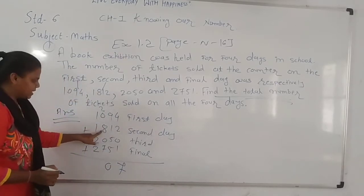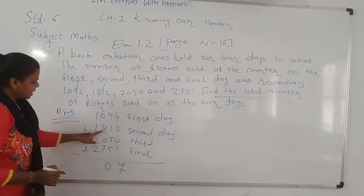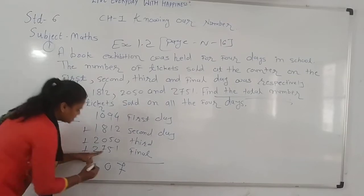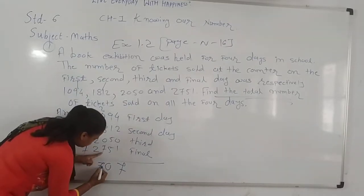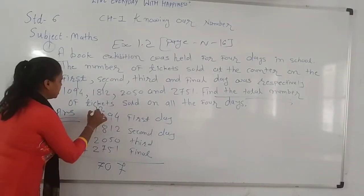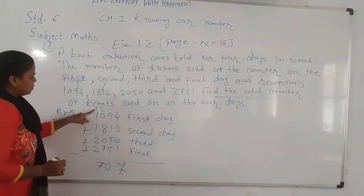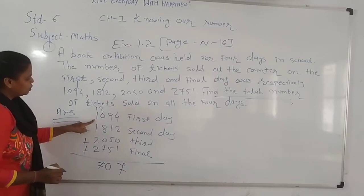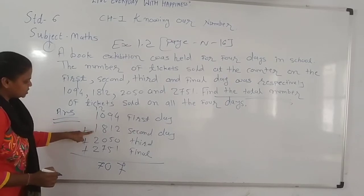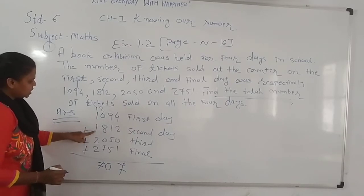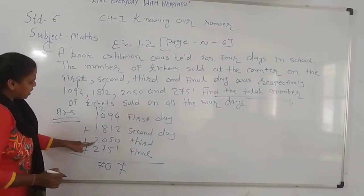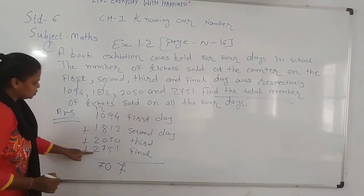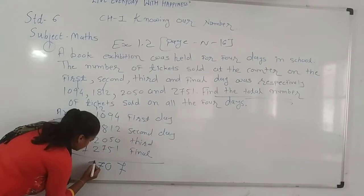2 plus 8 is 10, 10 plus 7 is 17, write 1 carry forward. 1 plus 1 is 2, 2 plus 1 is 3, 3 plus 2 is 5, 5 plus 2 is 7.